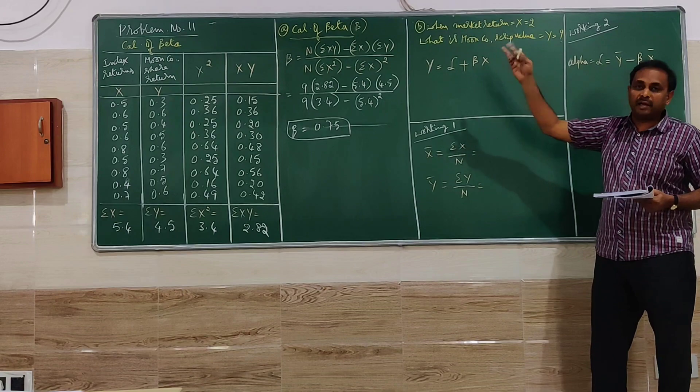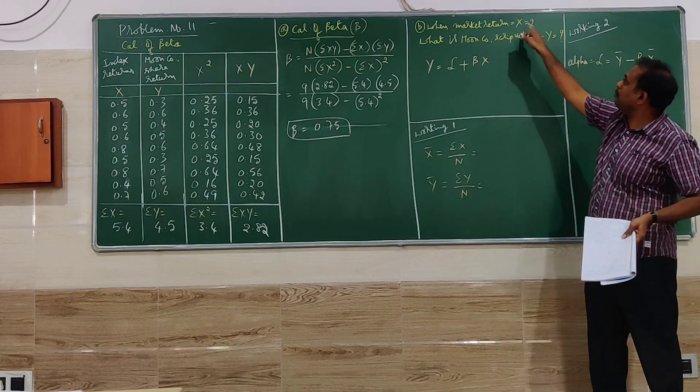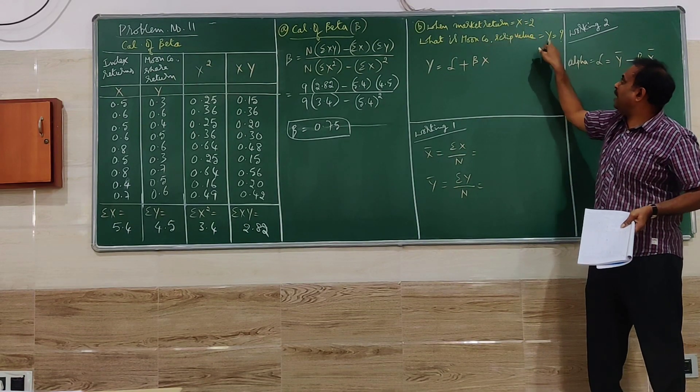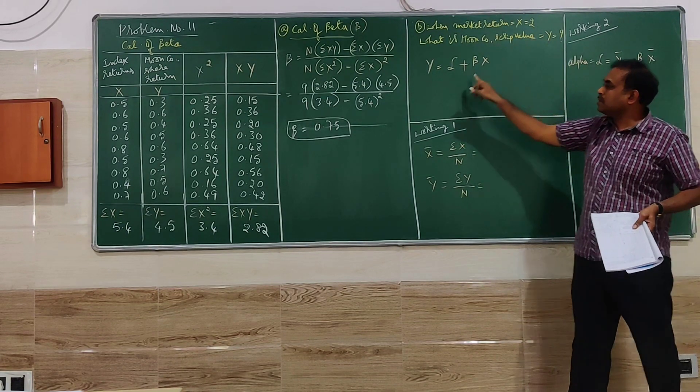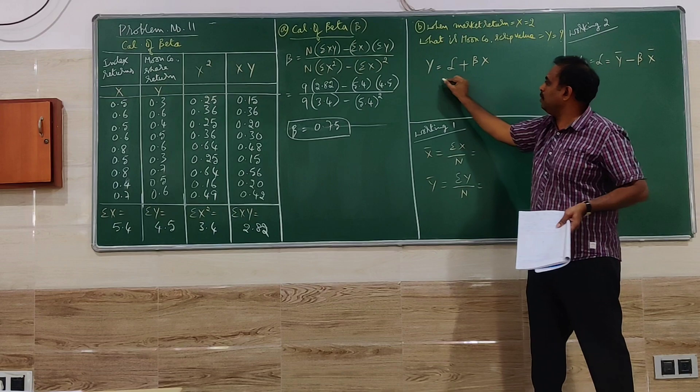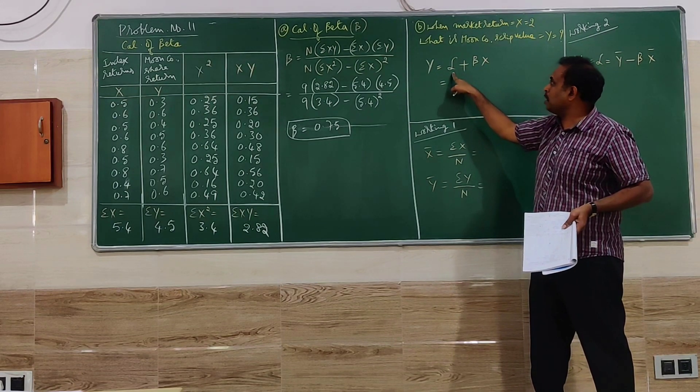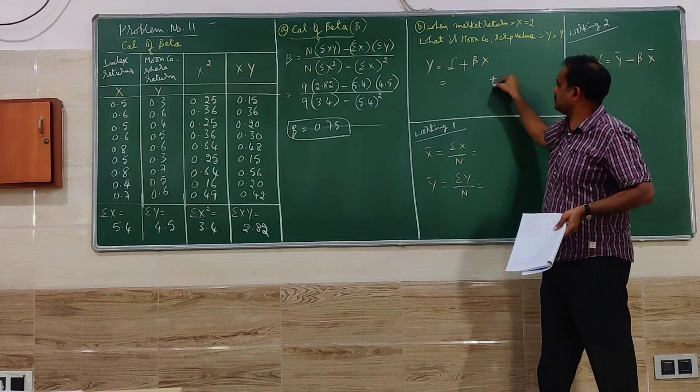With the help of one we will be finding another one. It is called a regression equation. Market return is X, script value is Y. With the help of X we'll be finding Y. Here the beta value will be helpful.